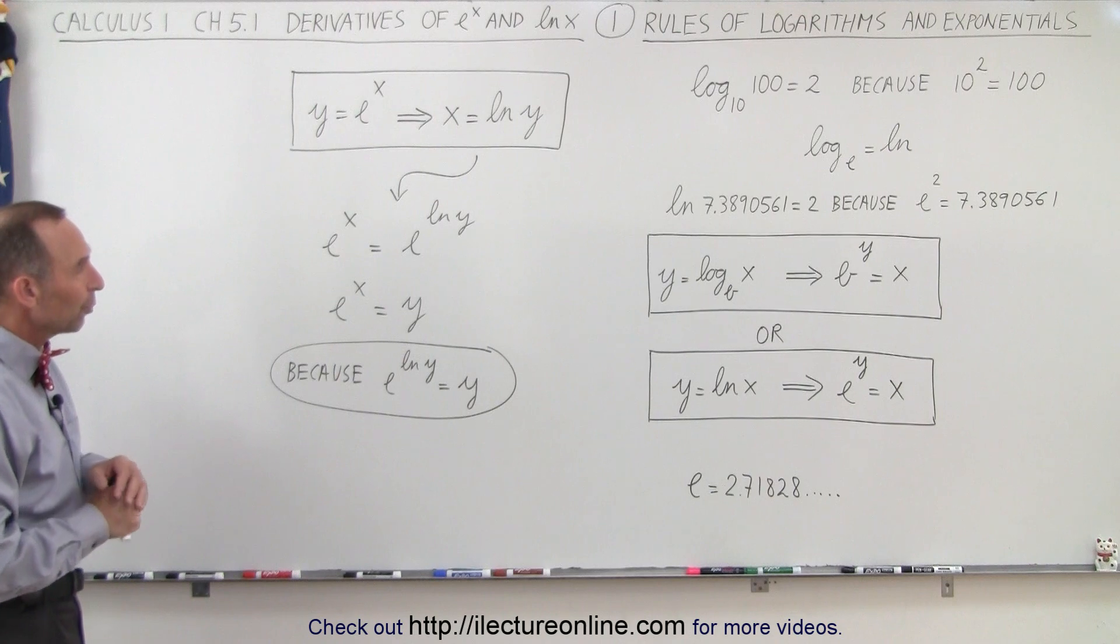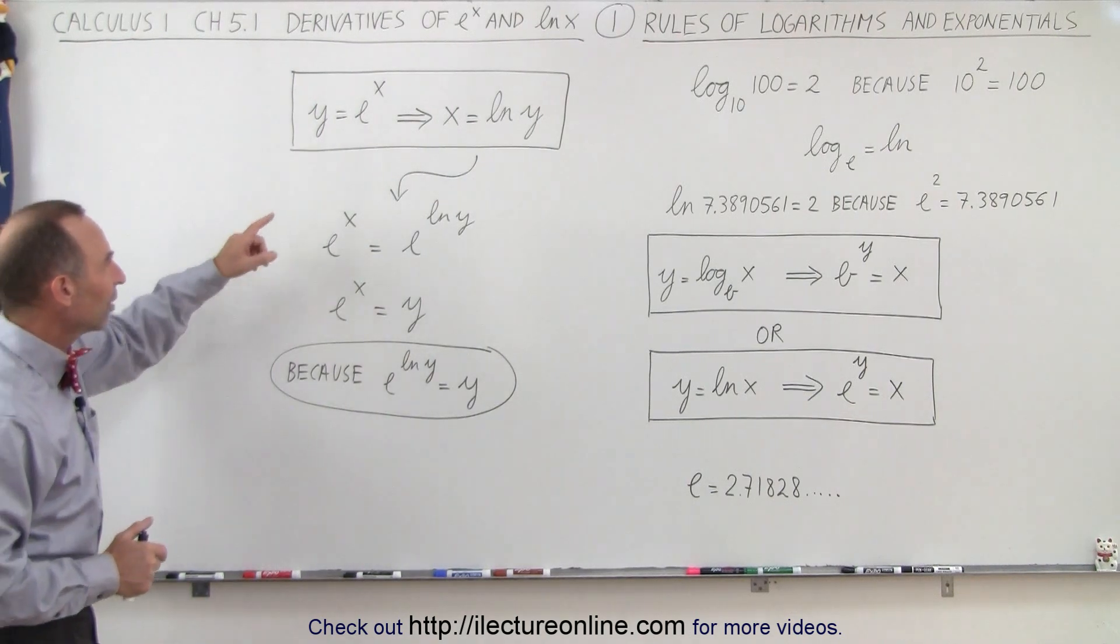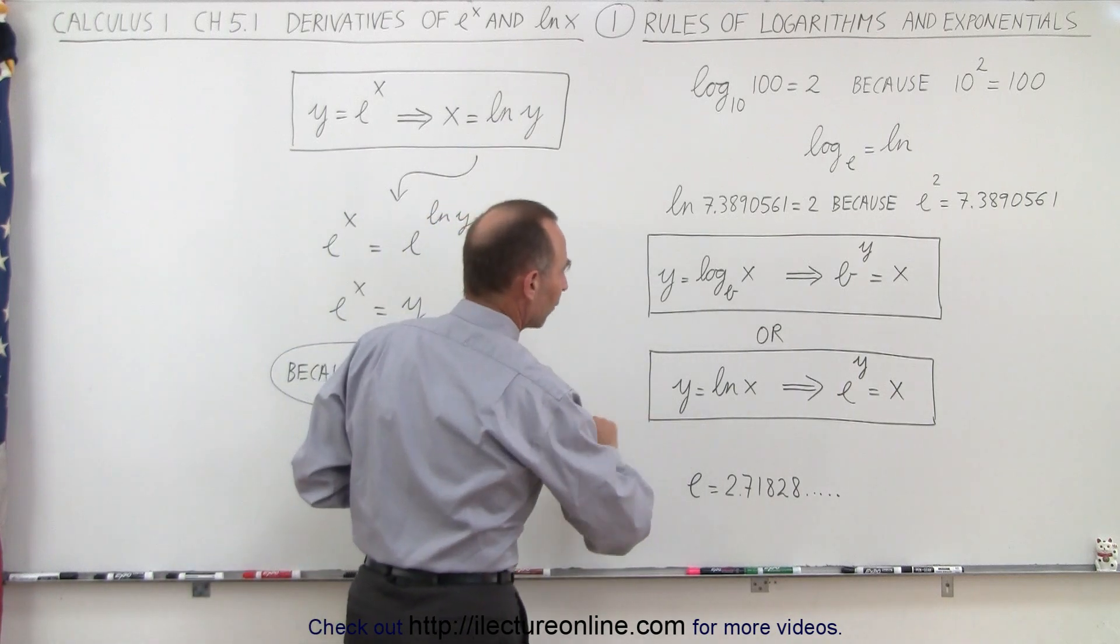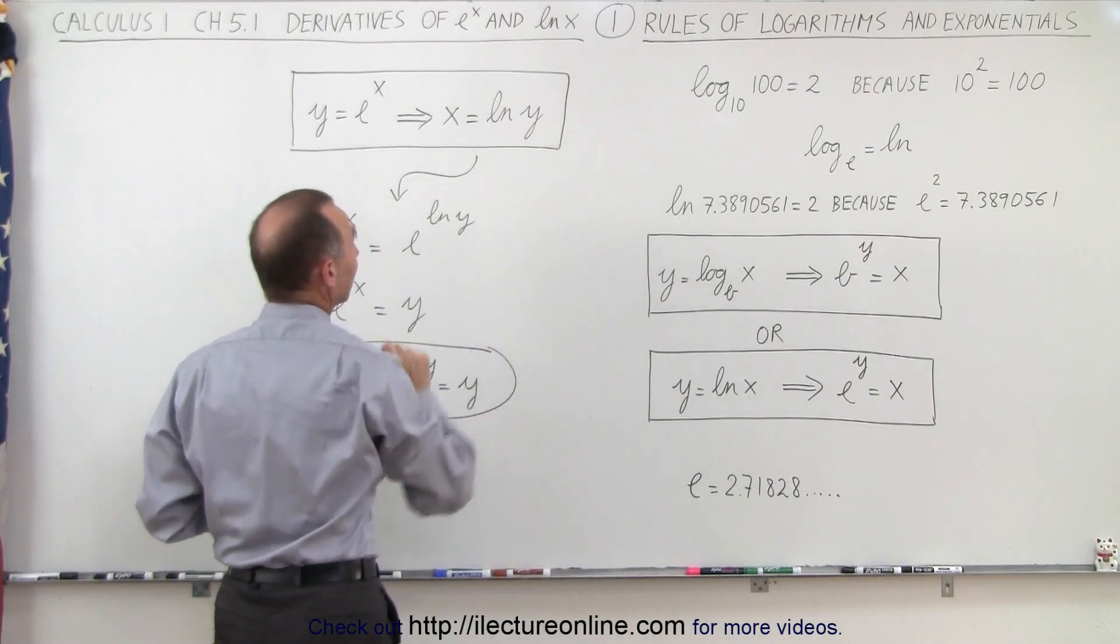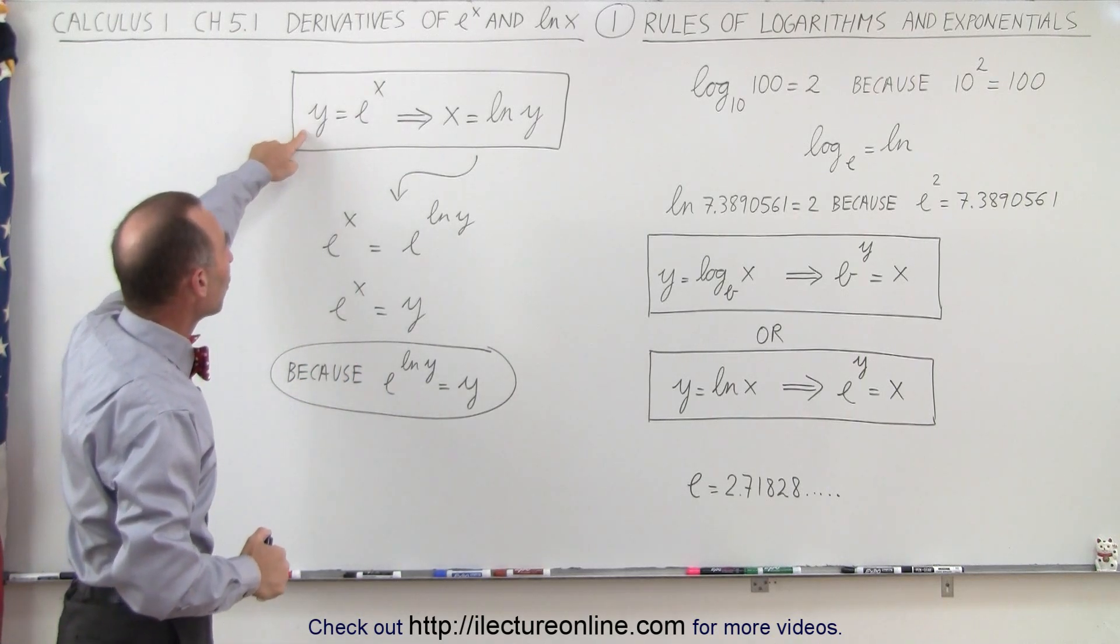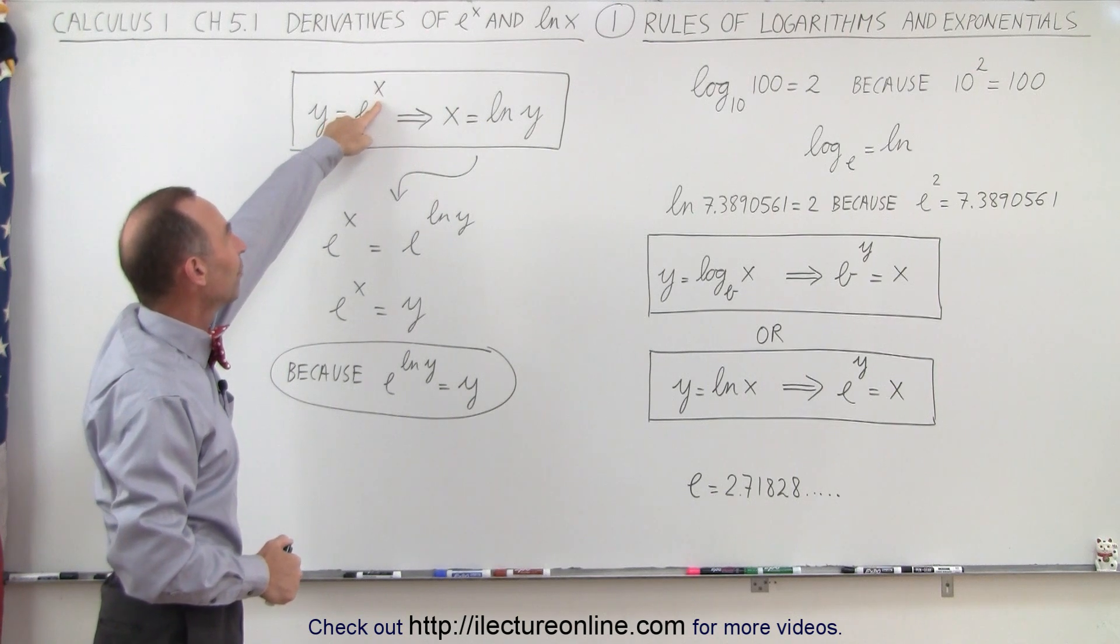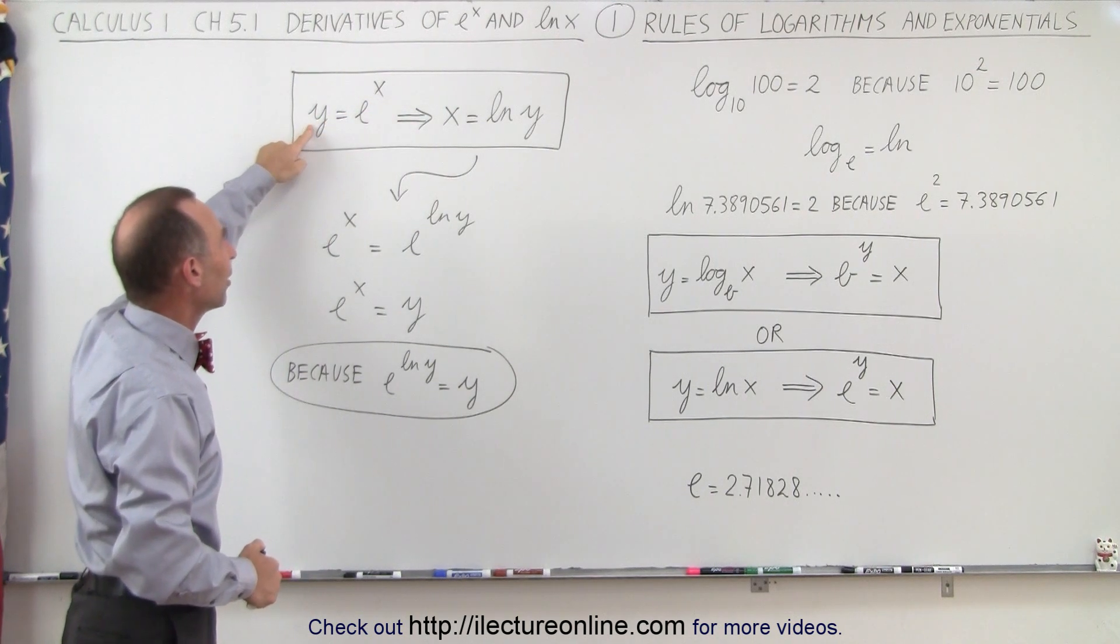We can also write it in a form we're usually used to seeing. Instead of taking the natural log of x, we're going to take the natural log of y, so we're going to reverse everything. We usually write y equals e to the x because this becomes the independent variable and this becomes the dependent variable.